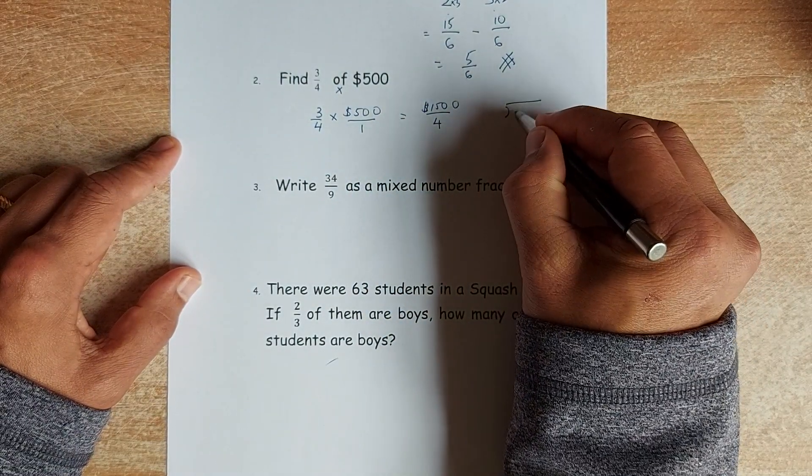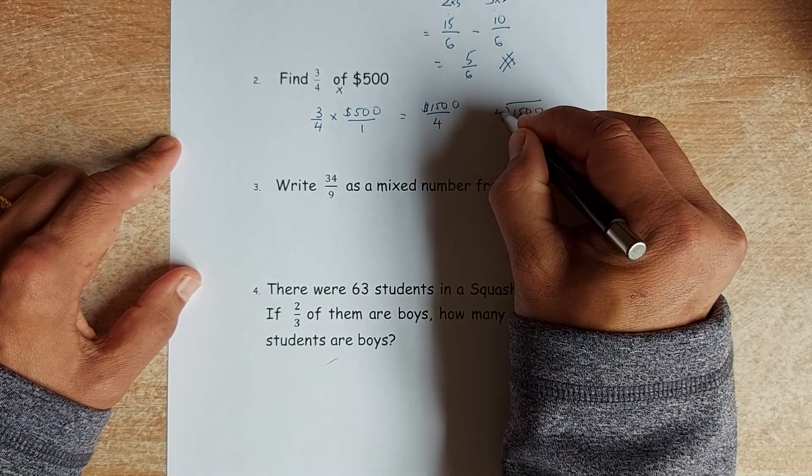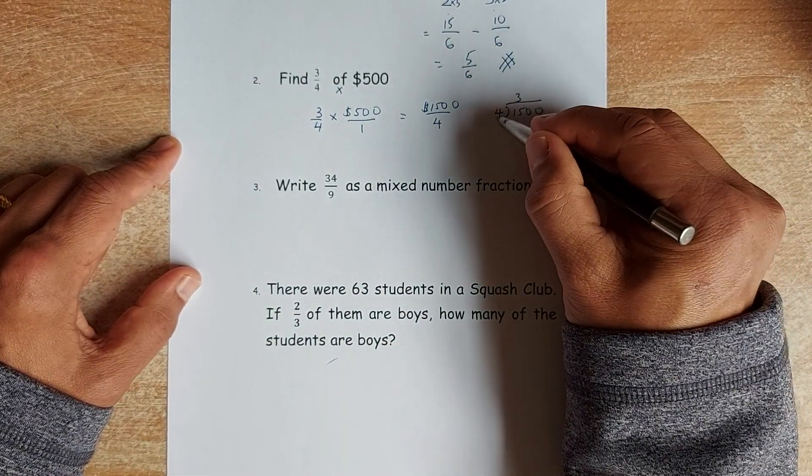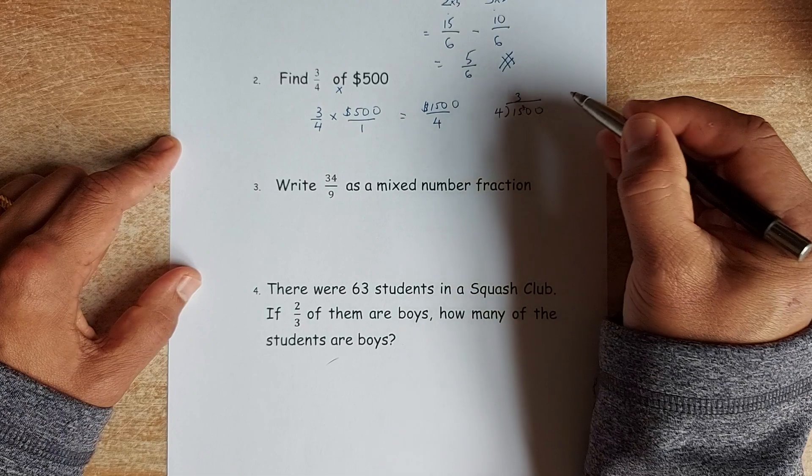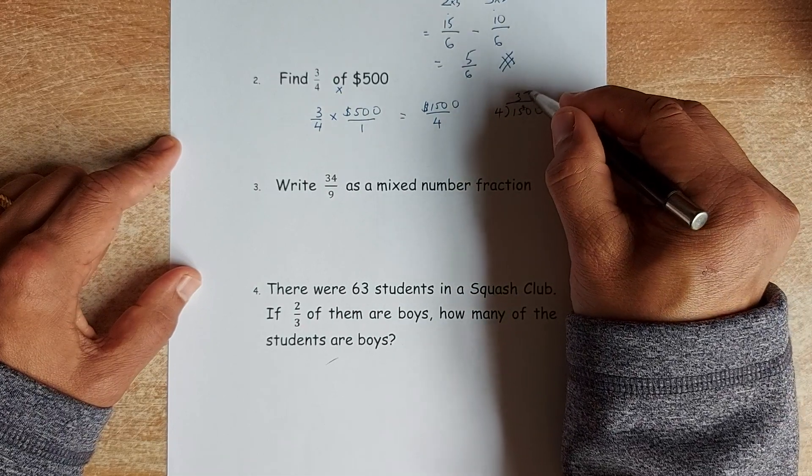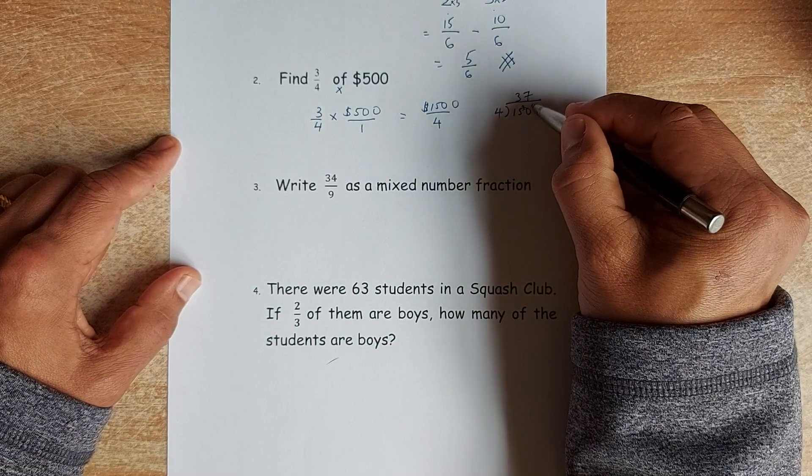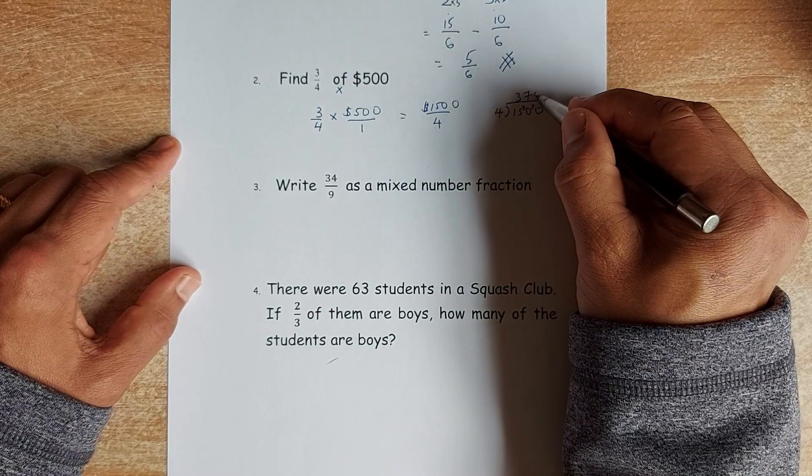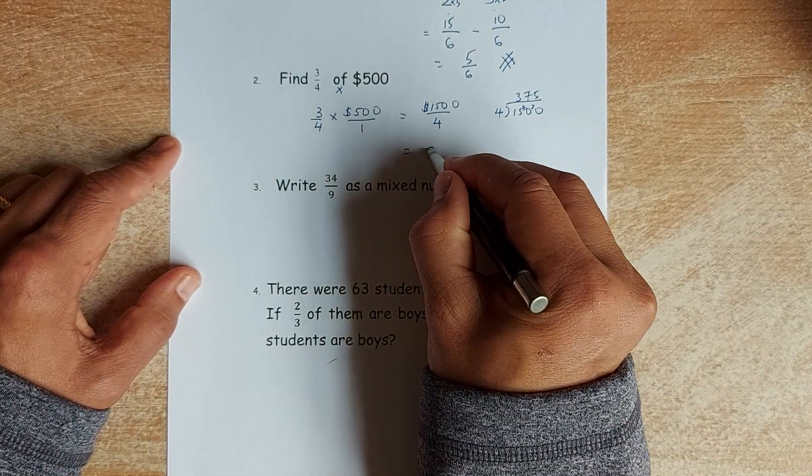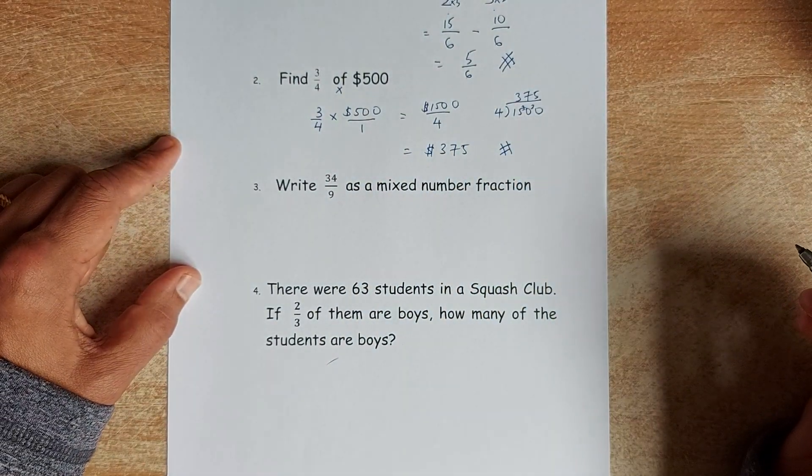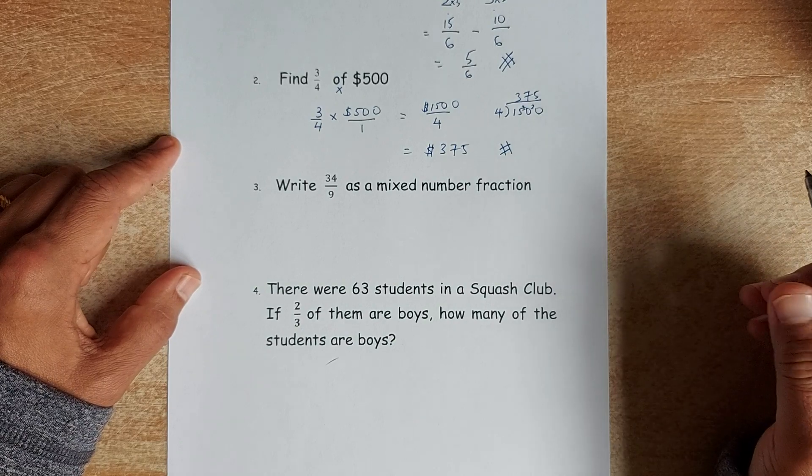If you use your long division, 1,500 divided by 4. So 15 into 4 is 3. 3 times 4 is 12. Remain the 3. 30 into 4 is 7. 7 times 4 is 28. Remain the 2. 20 to 4 is 5. So the final answer is $375. And that will be the answer for question 2.